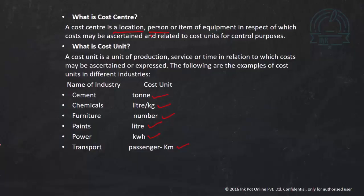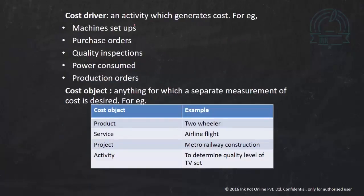Next is cost driver. A cost driver is something which influences or generates the cost. For example, more machine setups means more cost. More purchase orders may increase or decrease the cost — more purchase orders could reduce the raw material cost per unit. More quality inspections increase total cost, and more power units consumed means more cost. So a cost driver is something which influences the cost.